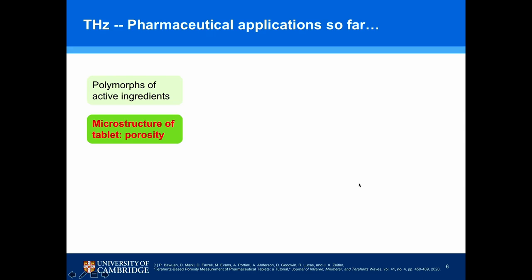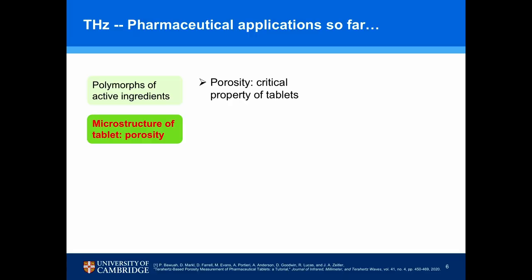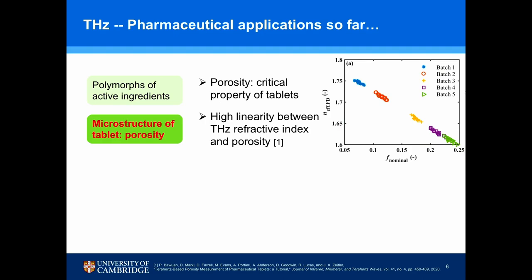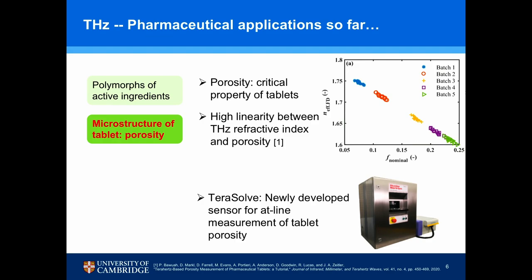Next, Terahertz can be used to sense porosity. Porosity is a critical attribute of tablets because most tablets are made from powder compaction, making them essentially a porous matrix. The porosity of a tablet not only decides its mechanical strength, it also significantly affects the dissolution performance. Studies have shown a really high linearity between the refractive index in the Terahertz range and tablet porosity, making it feasible as a measuring technique.